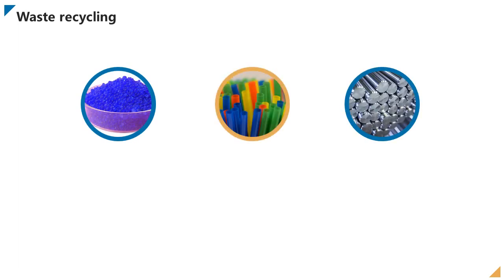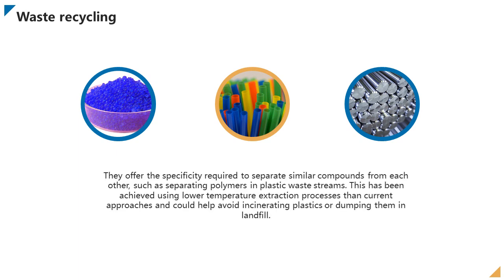Ionic liquids can aid the recycling of synthetic goods, plastics, and metals. They offer the specificity required to separate similar compounds from each other, such as separating polymers in plastic waste streams. This has been achieved using lower temperature extraction processes than current approaches, and could help avoid incinerating plastics or dumping them in landfill.